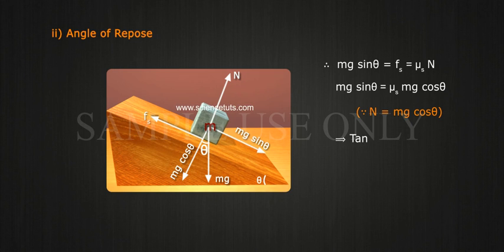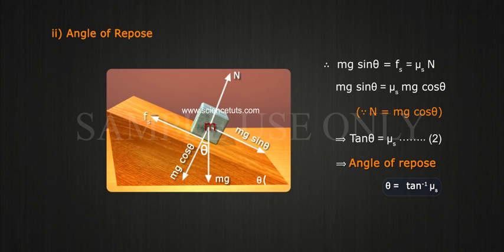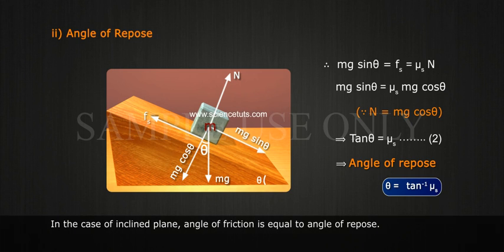Tan theta is equal to mu S. (Equation 2) The angle of repose theta is equal to tan inverse of mu S. Comparing equations 1 and 2, in the case of an inclined plane, the angle of friction is equal to the angle of repose.